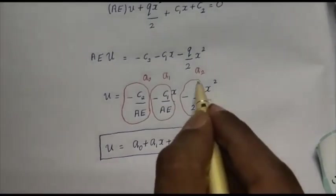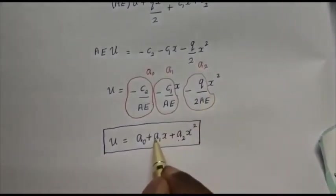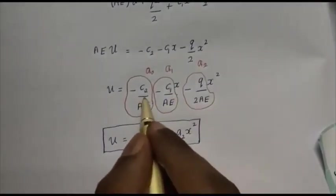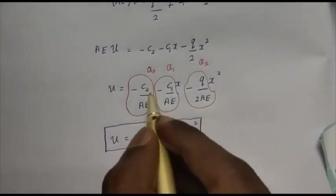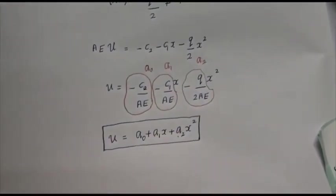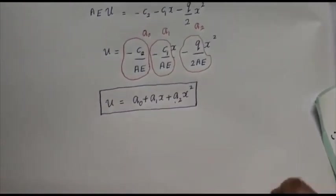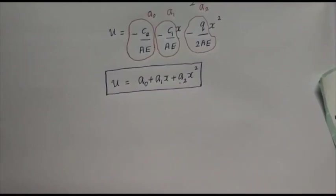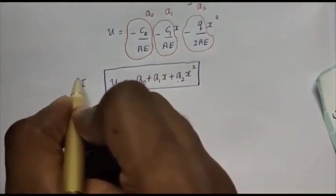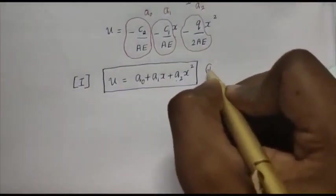We already know the value of A2 from our derivation: A2 = -q/(2AE). However, A1 requires knowing C₁ and A0 requires knowing C₂. This particular solution u = A0 + A1·x + A2·x² is called the trial solution, and you can see it is a quadratic trial solution.